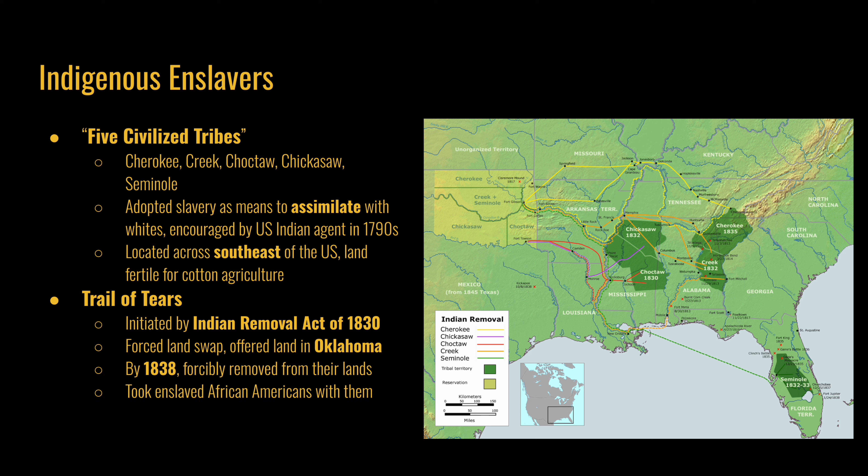By 1838, some of the last members of the Cherokee tribe were forcibly removed from their lands, and they took the enslaved African Americans with them. The number of people inside the Five Civilized Tribes that owned or enslaved Africans was actually quite small. They constituted a tiny elite of Indian society, often of mixed American Indian and white descent, but they held disproportionate economic and political power within the tribe, which is why they continued to push for maintaining slavery as an institution.